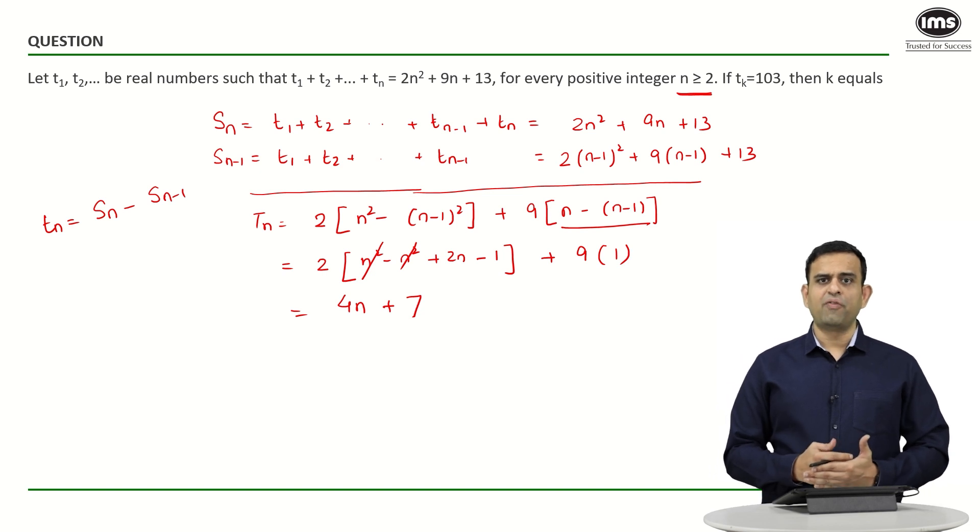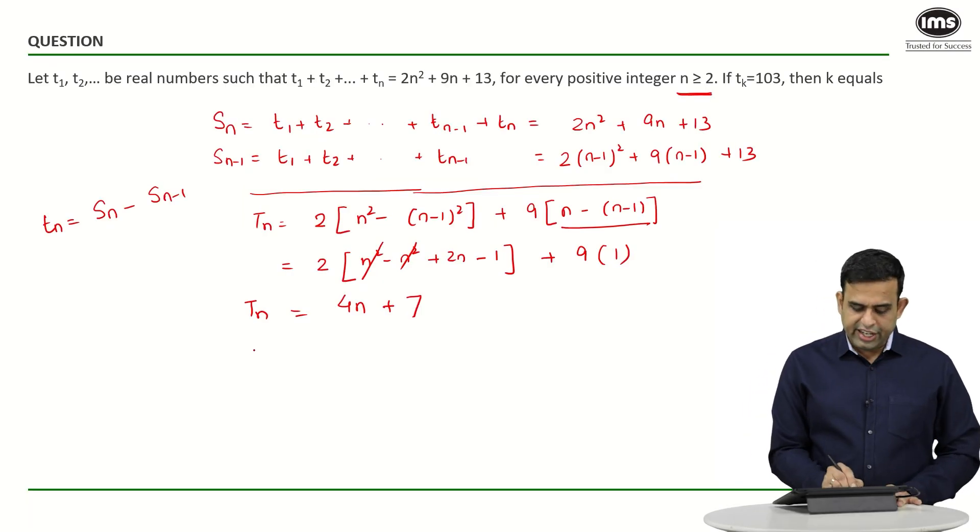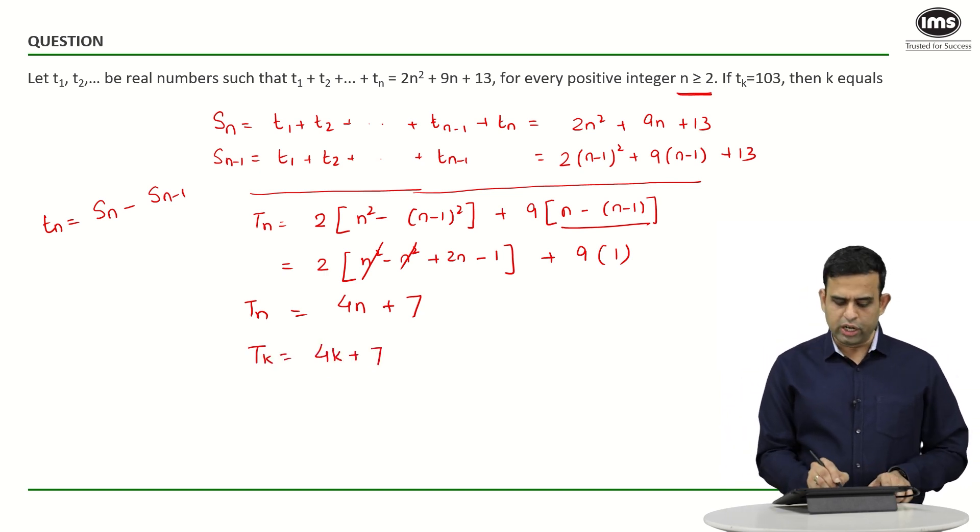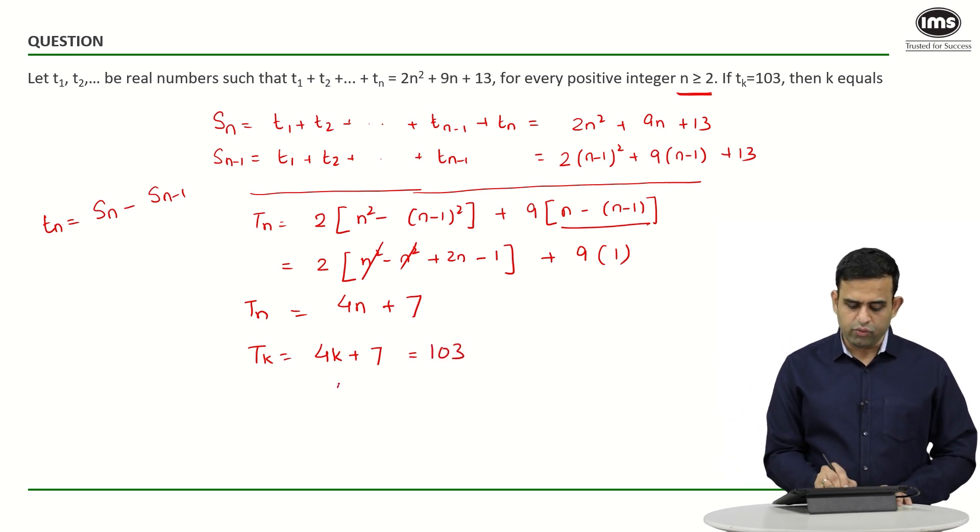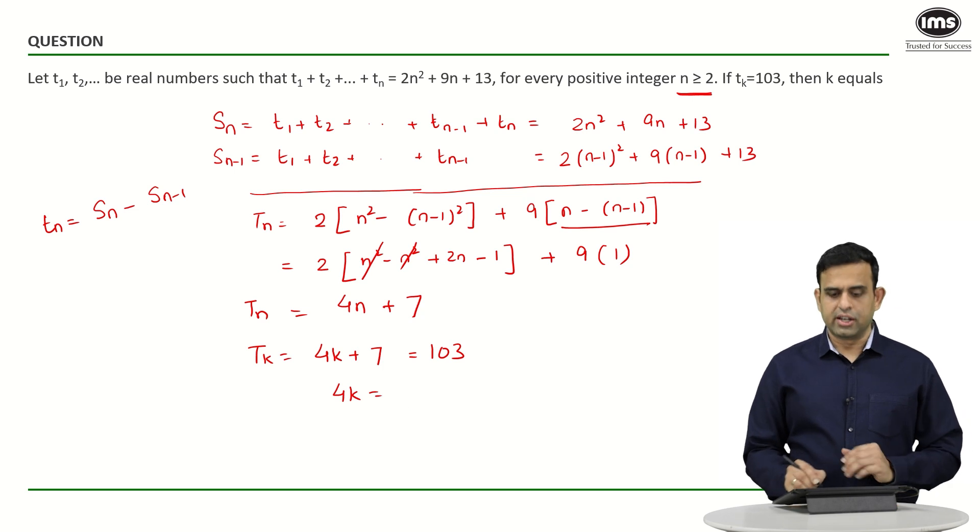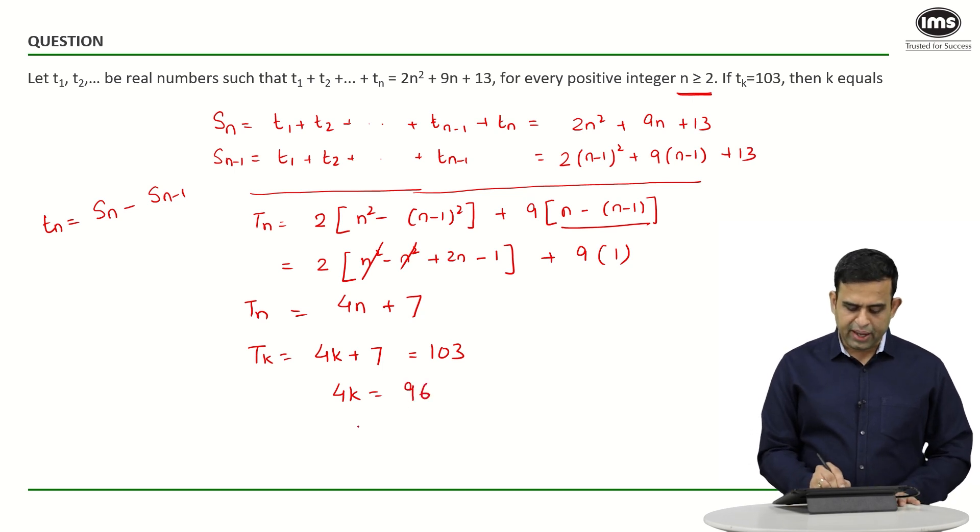So I know that my tₙ happens to be 4n + 7. So the term t_k will be equal to 4k + 7, and they're given that t_k is 103. So if I equate 4k + 7 as 103, I will get 4k equals 96.